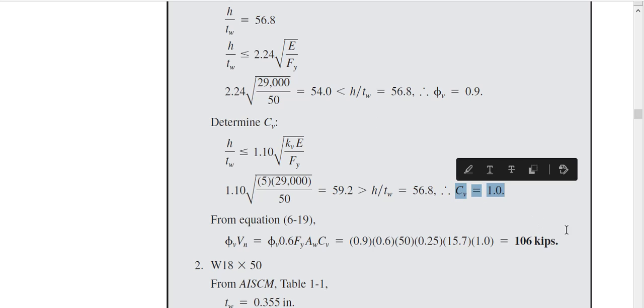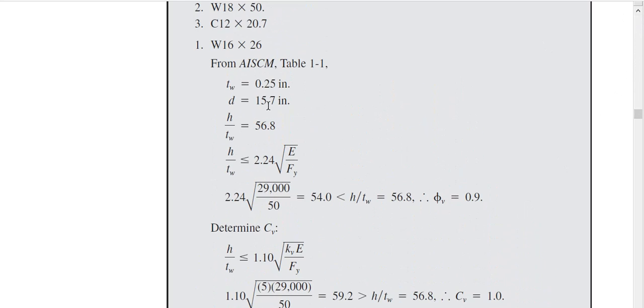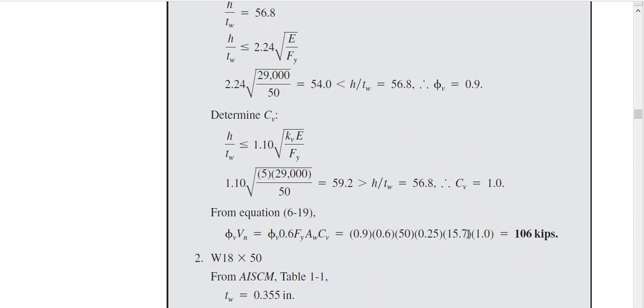Then our capacity will be phi V, 0.6 FY, AW, Cv. Phi V we found 0.9. FY is 50 KSI, because it is a W section, it is given in the problem. AW is D times TW. D is 15.7, TW is 0.25. So they will multiply 15.7. This whole part is AW, D times TW. Then Cv is 1. This way, we find the capacity of this beam, 106 kips.